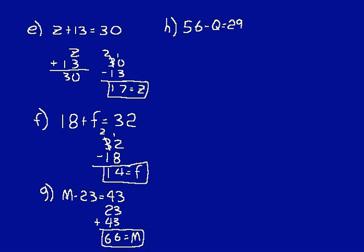Look at this problem: 56 minus q equals 29. Remember, when you have several similar problems, pause and try to work it yourself, then check the answer. We're finding what to subtract from 56 to get 29. Since q is the smaller number, take the difference of 56 and 29: 16 minus 9 is 7, 4 minus 2 is 2, so q equals 27.